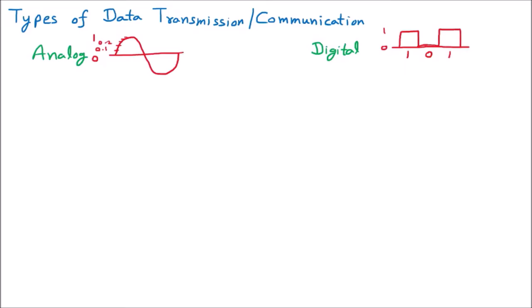The key difference between analog and digital is that analog signals can have floating point values between zero and one, but digital cannot — it only has zero and one values. We can easily conclude that analog signals are in waveform, represented as continuous waves.